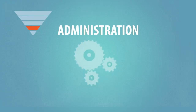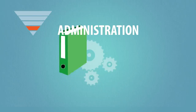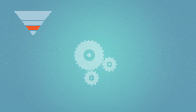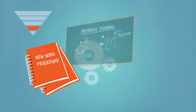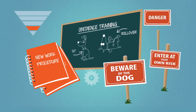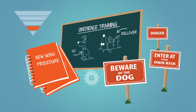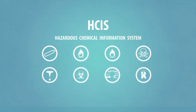Administrative controls are changes to the way people work. Examples of administrative controls include procedure changes, employment training, and installation of signs and warning labels such as those in the Hazardous Chemical Information System.